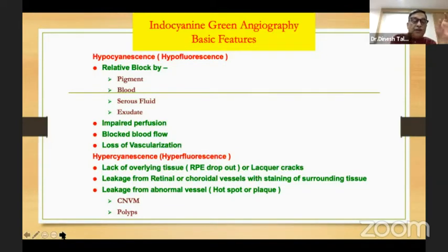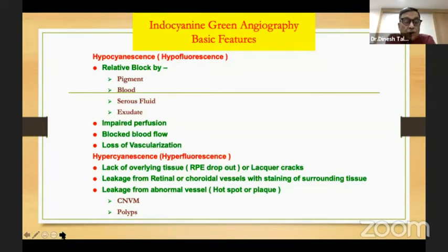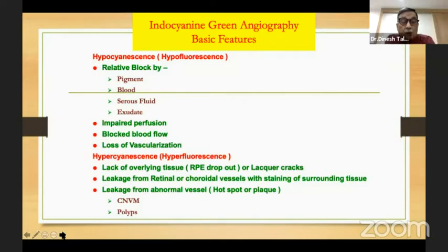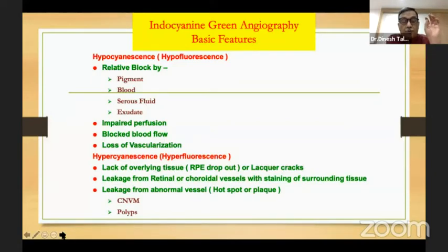Hypercyanescence — why do you get hypercyanescence? When there is a lack of overlying tissue, such as RPE dropouts or lacquer tracks — and it's important to remember that people think there's no such thing as a window effect with ICG, but that's not true. Also, leakage from retinal and choroidal vessels with staining of the surrounding tissue, or leakage from an abnormal tissue or abnormal vessel, like a hot spot, a plaque CNVM, or polyps.